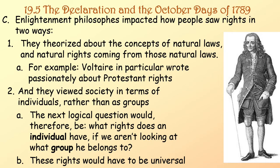Enlightenment philosophes impacted how people saw rights in two ways. First, they theorized about concepts of natural laws and natural rights coming from those natural laws. Voltaire in particular wrote passionately about Protestant rights. Second, they viewed society in terms of individuals rather than groups. So the next logical question became: what rights does an individual have if we aren't looking at what group he belongs to? These rights would have to be universal.